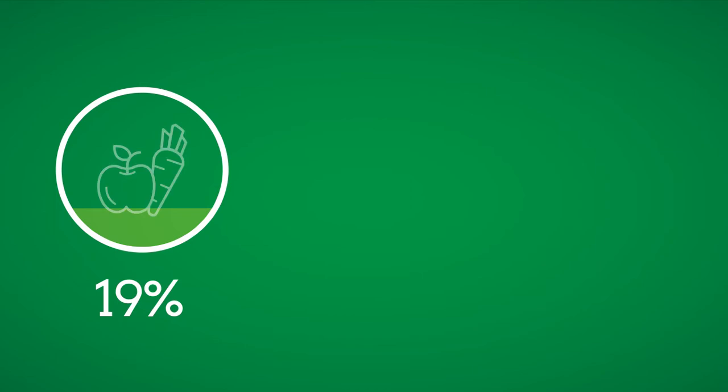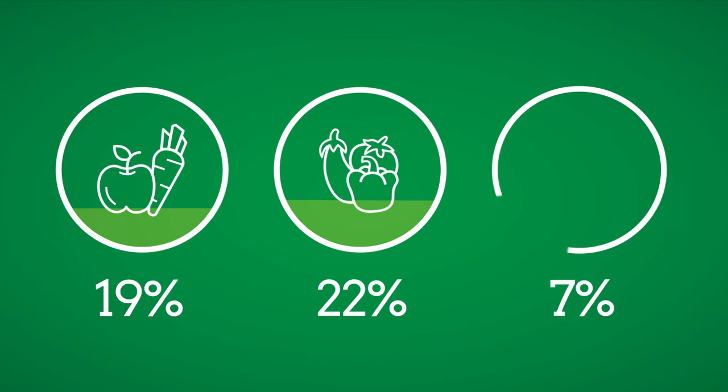Currently, only 19% report on sales of healthy food, 22% report on sales of vegetables, and only 7% report on sales of meat, fish and dairy versus plant-based proteins.